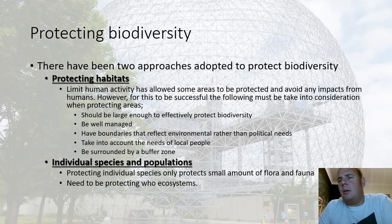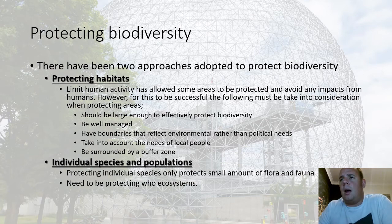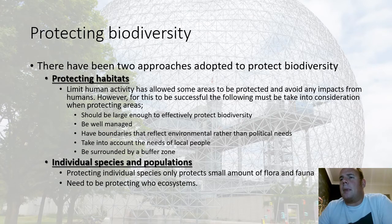When considering environmental management, protecting individual species only protects a small amount of flora and fauna — we need to protect whole ecosystems. The cane toad is a clear example: it was introduced to eat cane beetles but didn't target them, and instead reproduced far faster than native species, outcompeting them and causing massive ecosystem disruption. If we had examined the whole ecosystem first, we would have found natural reasons for the beetle problem and found a better management solution than introducing a single species.